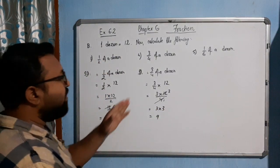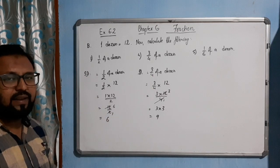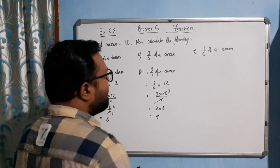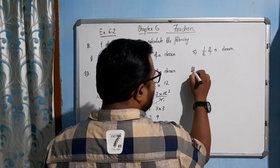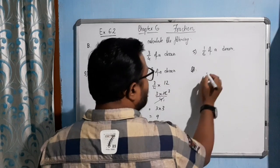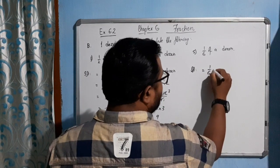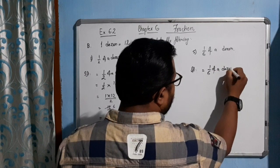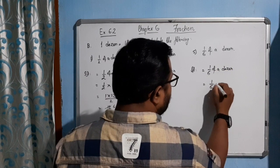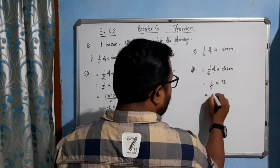So 3 by 4 of a dozen gives you how much? 9, is that clear? Now come to the fifth one, it's very simple. Solution equal to 1 by 6 of a dozen. It means 1 by 6 into 12.